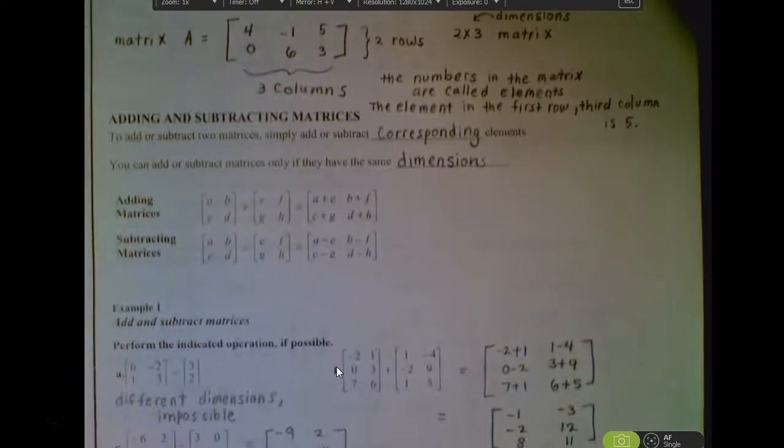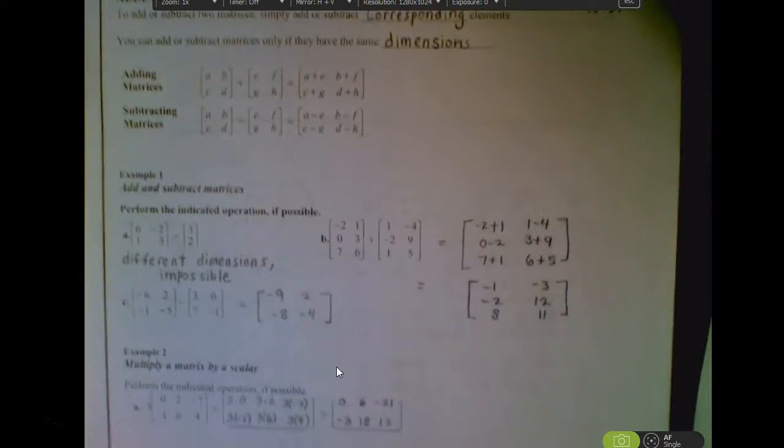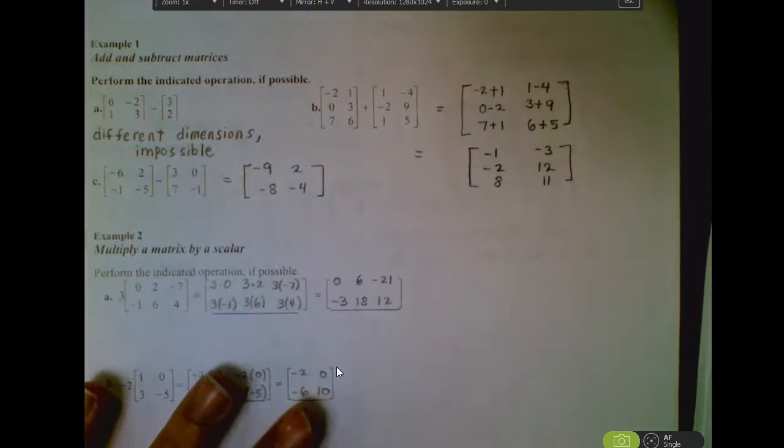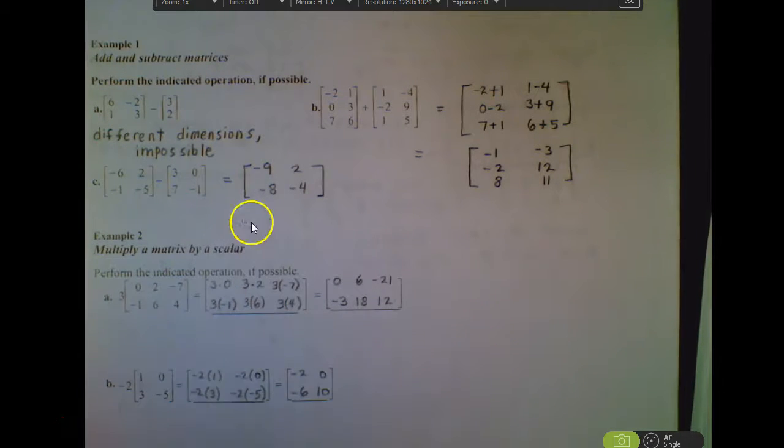Let's do a couple here with some real numbers in it. You'll notice that in the directions of example 1 here, it does say perform if possible. As I look at part A right here, this is a 2 by 2 and this is a 2 by 1 matrix. Because their dimensions are not the same, we just have to recognize that and just say it's not possible to subtract.